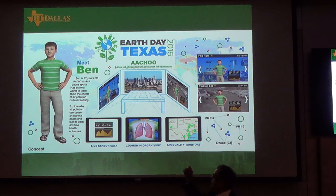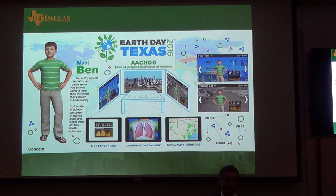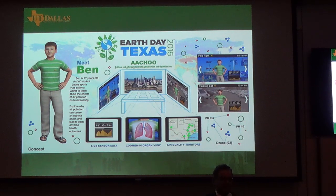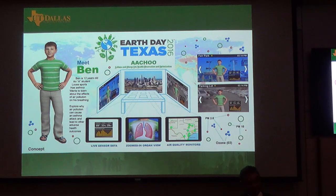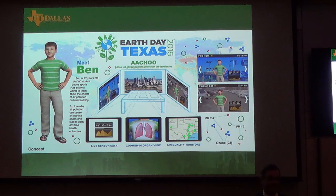Ben's attributes — age and ethnicity — are going to be driven by the environmental context. So if the pollution levels go up, his eyes will start watering, and if you go into his virtual lungs, you'll see the lungs are constricting. You can imagine this can be an engaging way to teach young kids how to look after themselves, and if you link their powers in a game to their looking after themselves, they might be really good at it.